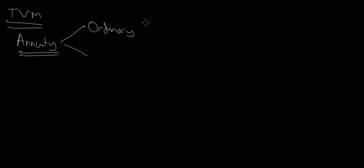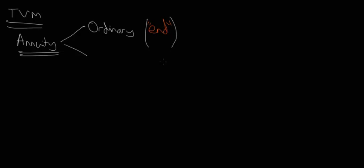The keyword you're looking for on a test is the word 'end.' In a test he wouldn't tell you this is an ordinary annuity problem — he would just say a hundred dollars is being paid at the end of each of the next three years, and ask you to calculate the present value or future value. So the keyword is 'end,' because the payments occur at the end of each period.